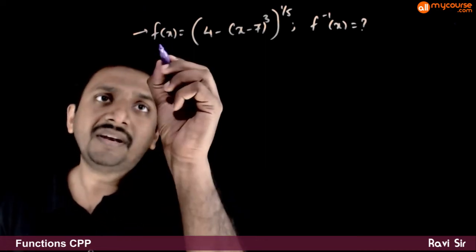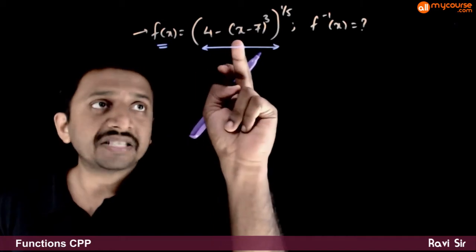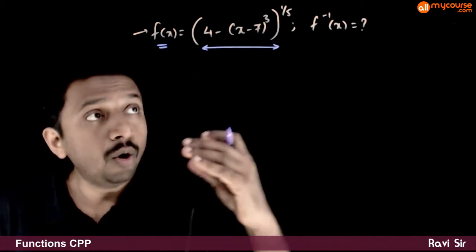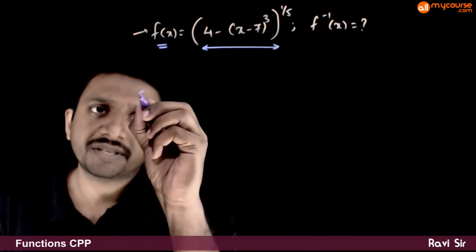In this question, we're given f of x is 4 minus x minus 7 whole cube whole power 1 by 5. You are asked to find the inverse function f inverse of x.